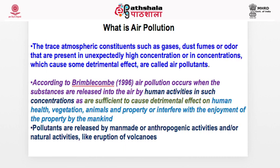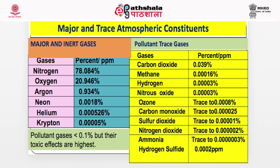In the atmosphere, everything you can conceive that is toxic or harmful is present, but it is not damaging us because its concentration is below the threshold limit. The major inert gases are nitrogen, oxygen, argon, neon, helium, and krypton. The pollutant gases — less than 0.1% of the atmosphere — have the highest toxic effects. These include carbon dioxide, methane, hydrogen, nitrous oxide, ozone, carbon monoxide, sulfur dioxide, nitrogen oxide, and ammonia. They are present in very small amounts but are the most notorious. Even small amounts can be toxic, harmful, and damaging.